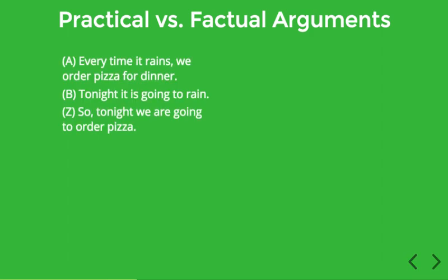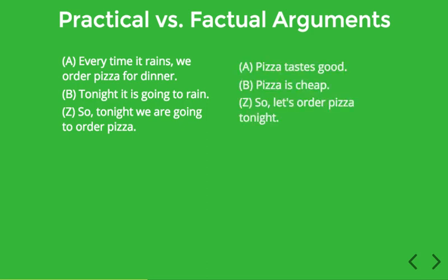Here's a very simple argument: every time it rains we order pizza for dinner; tonight it is going to rain; so tonight we're going to order pizza. That seems like a pretty straightforward and persuasive argument. Now consider this one: pizza tastes good, pizza is cheap, so let's order pizza tonight.